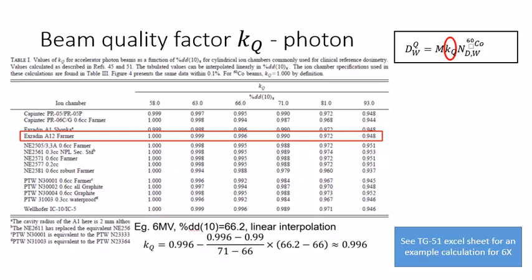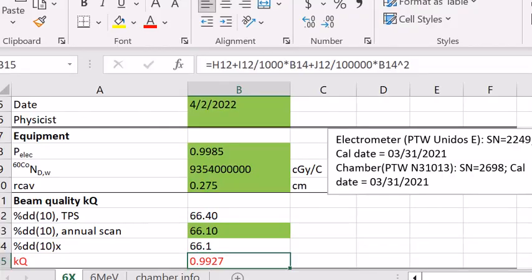Let's see a more closed example of what we do for our annual. We want to do the 6MV KQ factor using a different type of chamber. The chamber we use is actually the PTW semi-flex chamber, which is slightly smaller than the farmer chamber in the last slides.